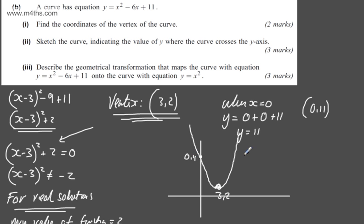Let's make that slightly more accurate. This is going to be (3, 2), this will be (0, 11), and we can say y = x² - 6x + 11. So there's a quick sketch. We've stated the point of intersection here and I've also put on the minimum value.